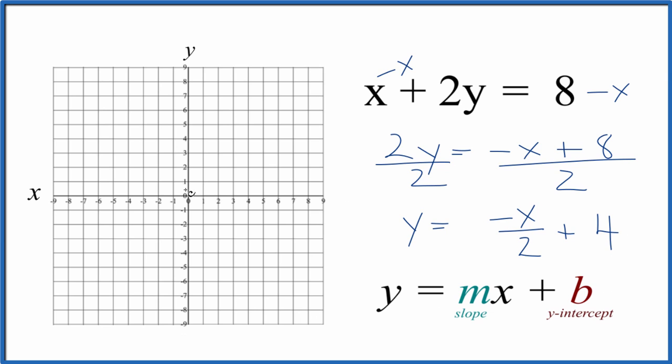So now we have it in slope-intercept formula, and we can graph this equation x plus 2y equals 8. So we get our y-intercept here, and the y-intercept, that's 4. Go to the y-axis, we find 4. That's our first point. Our line will cross the y-axis right there.